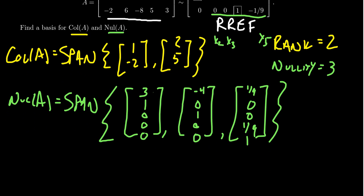3, 1, 0, 0, 0, negative 4, 0, 1, 0, 0, and 1 ninth, 0, 0, 1 ninth, 1.